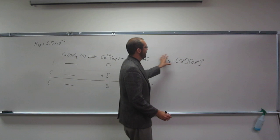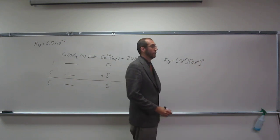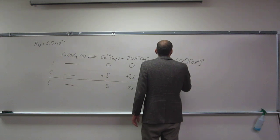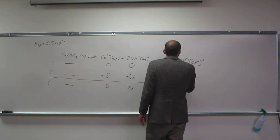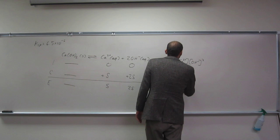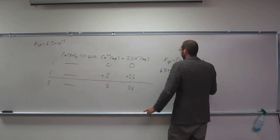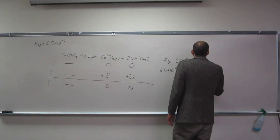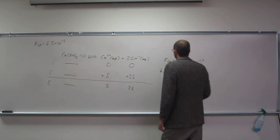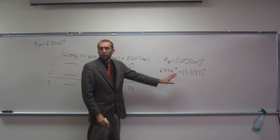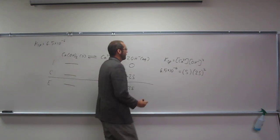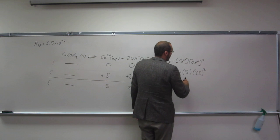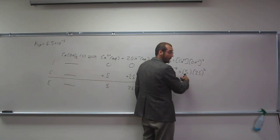So let's just plug in everything into this equation. That's all we have to do. So we've got the Ksp value, 6.5 times 10 to the negative 6, equals S times 2S squared. So it's going to equal 4S squared times S, so that's 4S cubed.